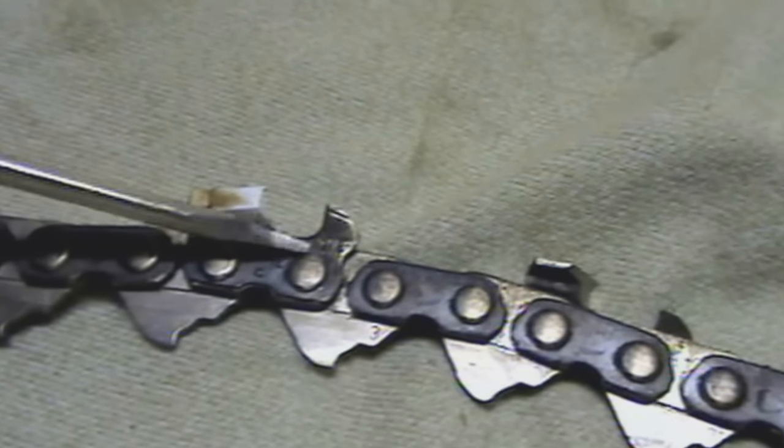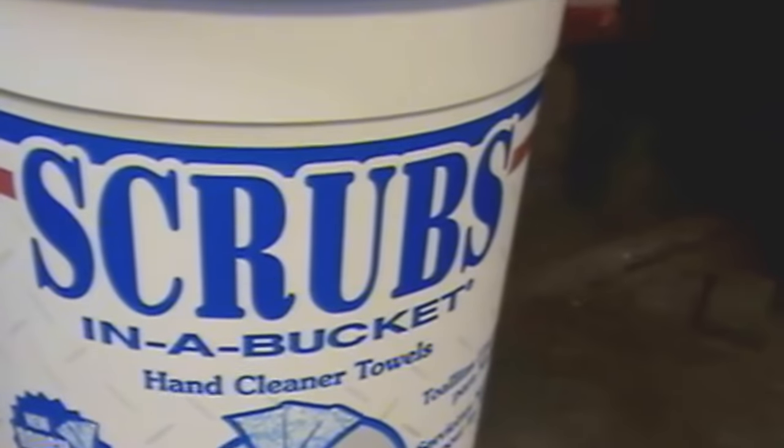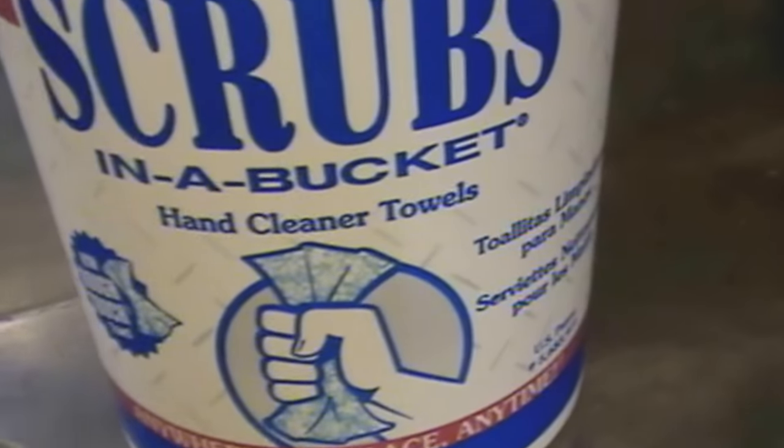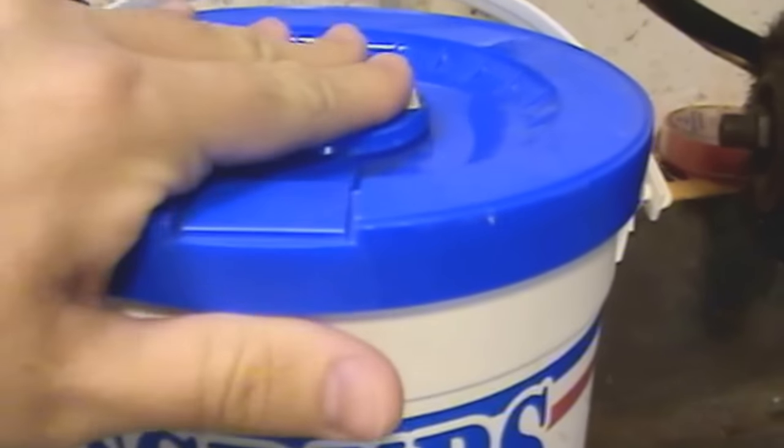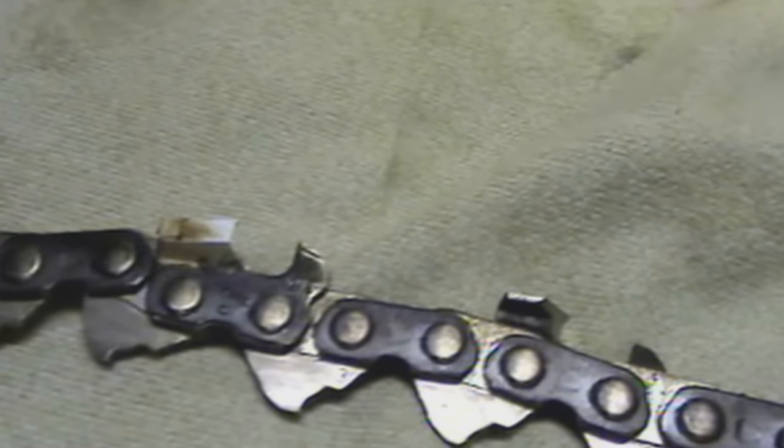Before I do anything I normally clean the tooth. I have these little scrubs - one side's a little rough, the other side's smooth with a little detergent on it. You can use a different method if you want. Some use a wire brush. Some people actually soak the whole chain in degreaser. I don't prefer to do that but if that works for you that's fine.